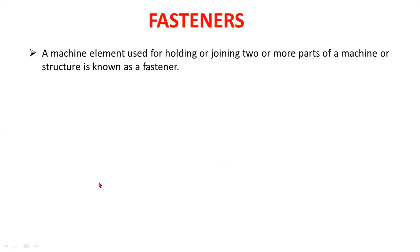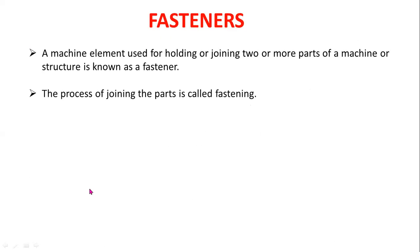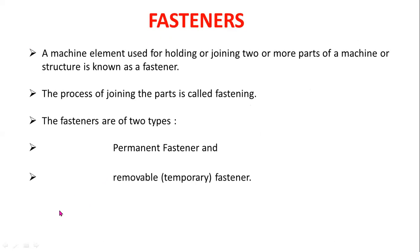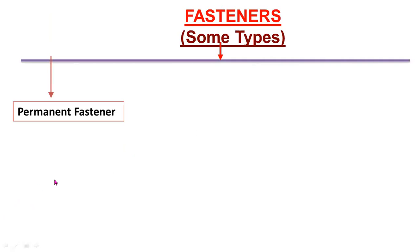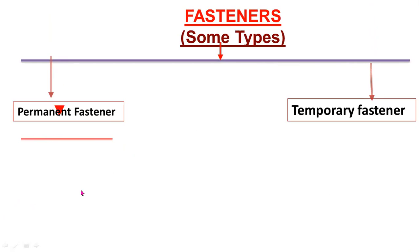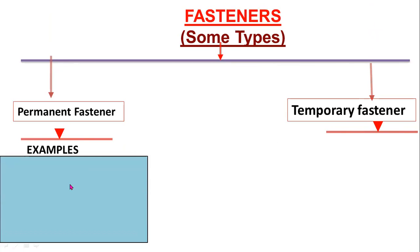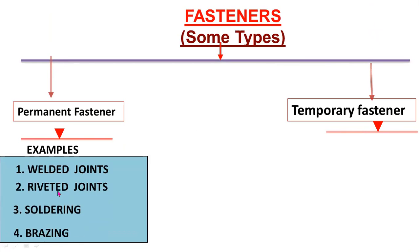The machine element used for holding or joining two or more parts of a machine or structure is known as a fastener. The process of joining the parts is called fastening. Fasteners are of two types: permanent fasteners and removable or temporary fasteners. Examples for permanent fasteners are: welded joint, riveted joint, soldering, and brazing.